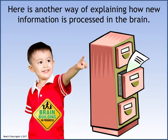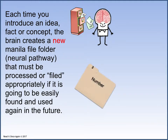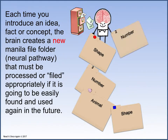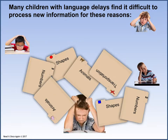Here's another way of explaining how new information is processed in the brain. Pretend that the day your students enter your classroom, their brains are similar to an empty filing cabinet. Each time you introduce an idea, fact, or concept, the brain creates a new manila file folder — or neural pathway — that must be processed or filed appropriately if it's going to be easily found and used again in the future. Children with language delays have a difficult time placing and organizing these file folders in their filing cabinets. Placing file folders in the filing cabinet is called receptive language — this is when information is being placed and processed in the brain.